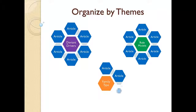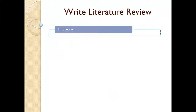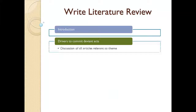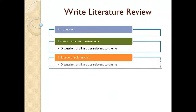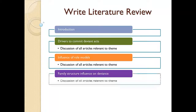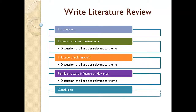Now I'm ready to start writing my literature review. I want to begin with an introduction section that briefly explains my research topic, the types of resources I looked at when searching for information, and anything else that might be relevant. I then discuss my information by the themes or groups I identified earlier, and wrap up with a short conclusion where I highlight any major points that might have emerged.